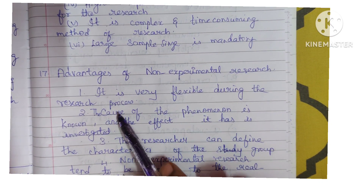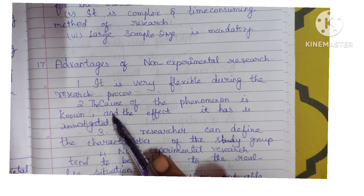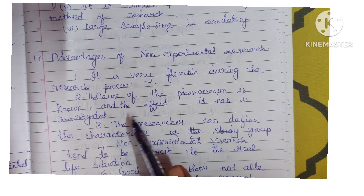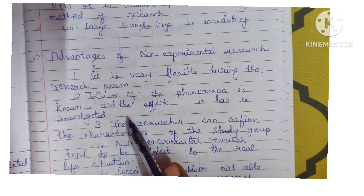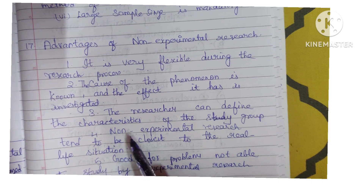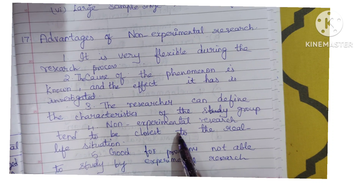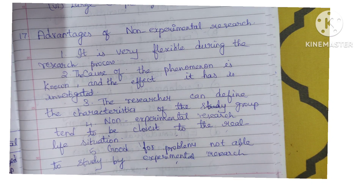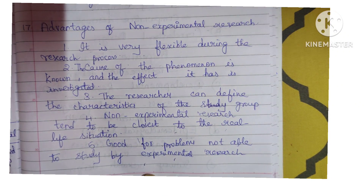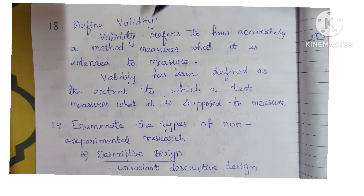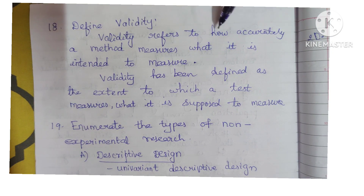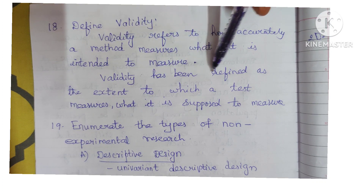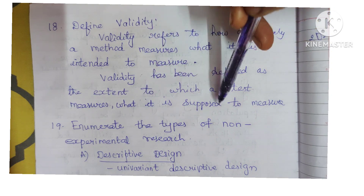Advantages of non-experimental research: it is very flexible during the research process. The cause of the phenomena is known and the effect it has is to be investigated. The researcher can define the characteristics of the study group. Non-experimental research tends to be closest to real life situations. It is good for problems not able to be studied by experimental research. Define validity — validity refers to how accurately a method measures what it is intended to measure.